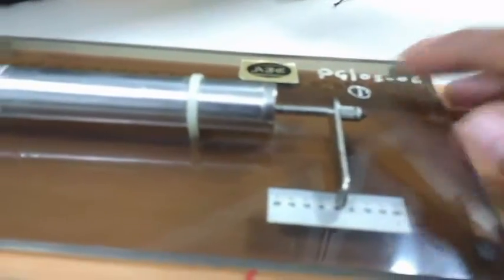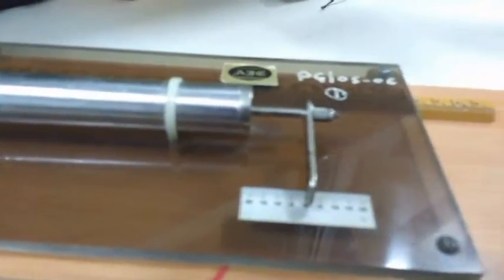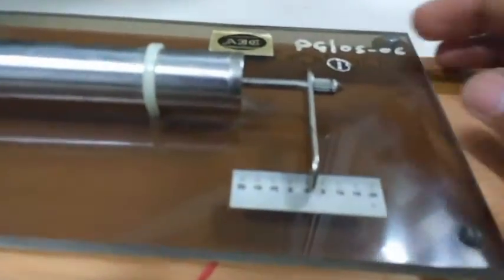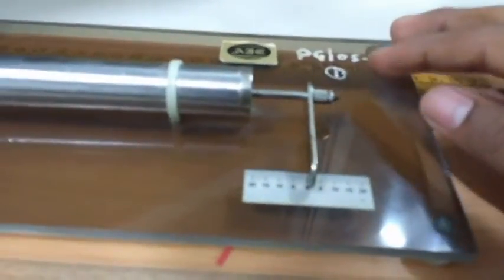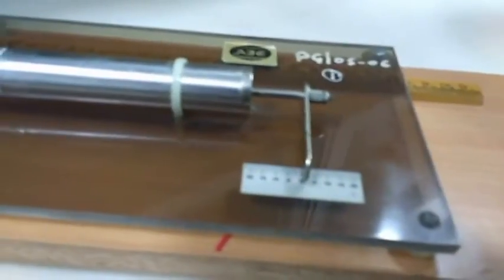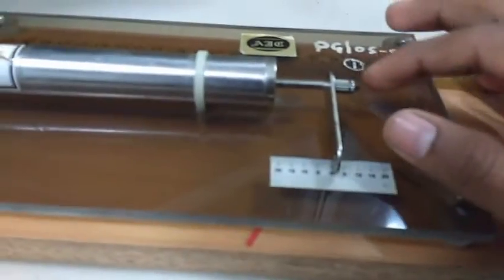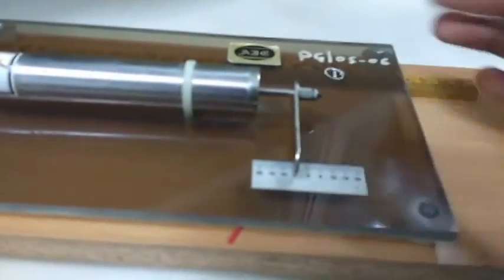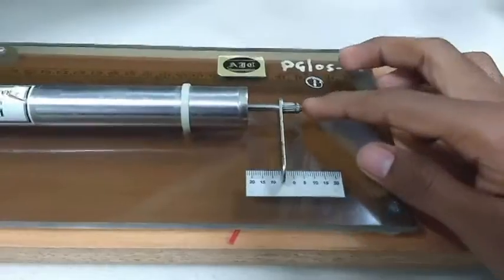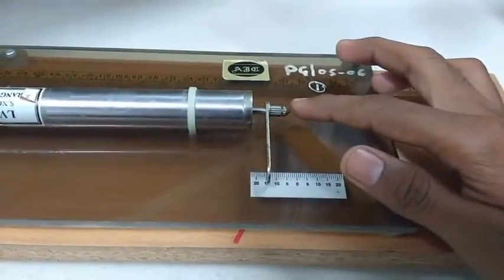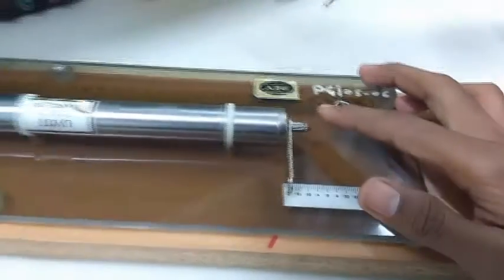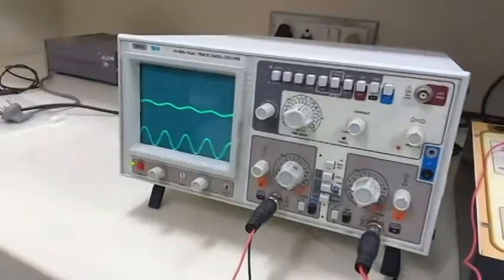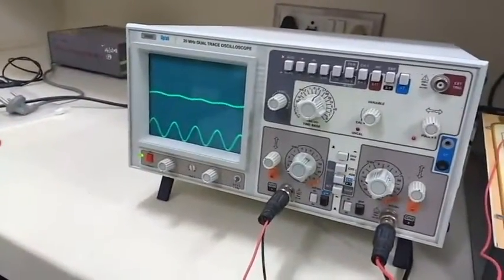This AC part as the input of DC part. So you can see here that till now we were taking this AC output. By varying 1 to 2mm you can take the output for the AC part.